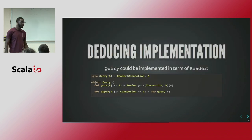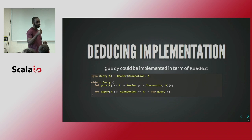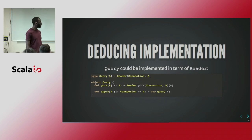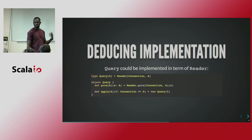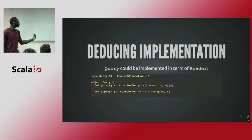So for the implementation of our Query type, it's very simple: it's just aliasing the Reader Monad and setting the context as a Java SQL connection. That's it. With that Query type, we can also define the 'pure' function and 'apply' function for convenience.